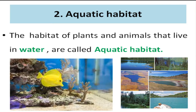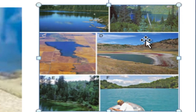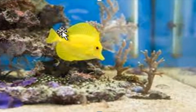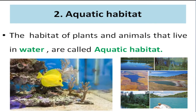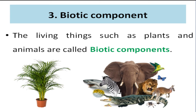Our next keyword is aquatic habitat. The habitat of plants and animals that live in water is called aquatic habitat. Examples include ponds, rivers, lakes, and oceans. Some animals like fish and dolphins live in the aquatic habitat.